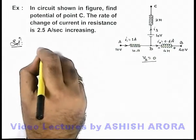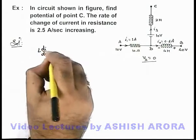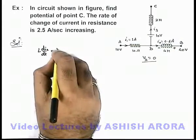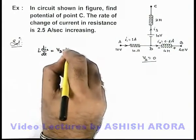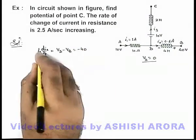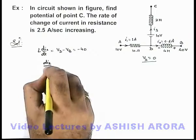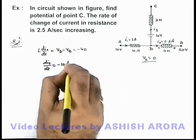And here we can write L di2/dt is the potential difference across the terminals, which is here we can write V_D minus V_B which is minus 40. We substitute the value of L to be 4, here we are getting di2/dt is equal to minus 10 ampere per second.